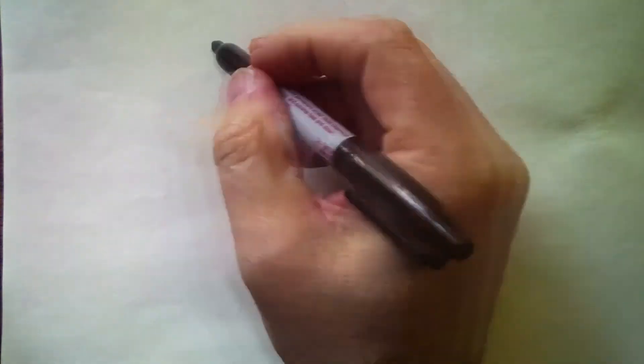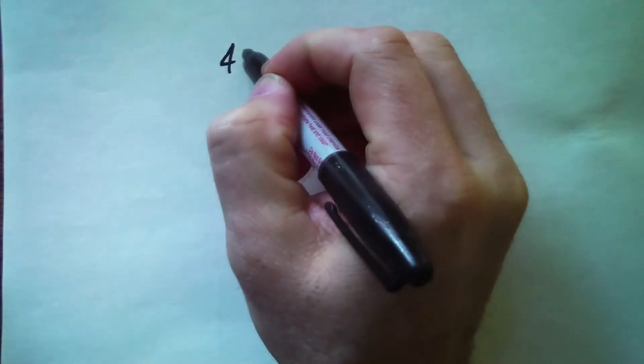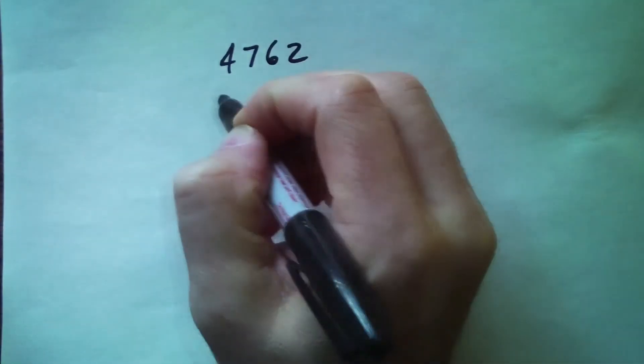All right, another question we had was about the complement algorithm for subtraction, so let's look at how and why that works. Let's start off with just an example, so let's say 4762 minus 3927.